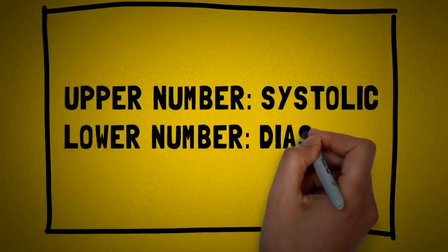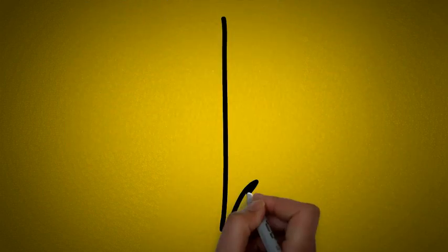The upper number is the systolic and the lower number is the diastolic. The causes of hypotension can range from dehydration to a medical disorder.